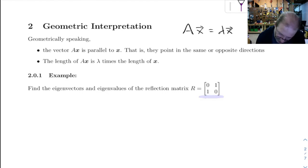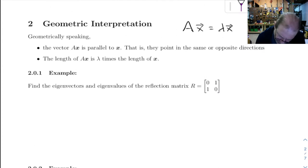This first one is a reflection matrix, and this reflects across the line Y equals X.